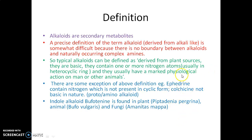What are alkaloids? Alkaloids are secondary metabolites. However, the precise definition is somewhat difficult because there is no clear boundary between alkaloids and naturally occurring complex amines. We can define alkaloids as secondary metabolites derived from plant sources. They are basic in nature, contain one or more nitrogen atoms, usually in a heterocyclic ring, and have a marked physiological action on humans or other animals.